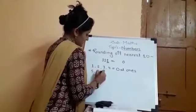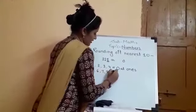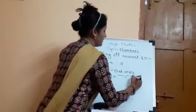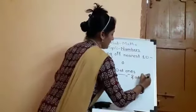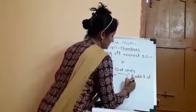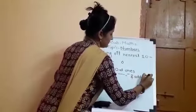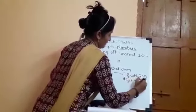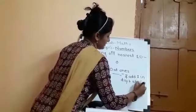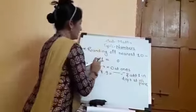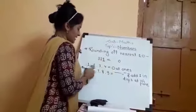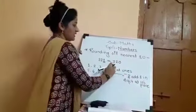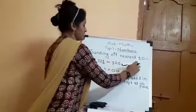If the digit at the 1's place is 5, 6, 7, 8, or 9, then you put 0 at the 1's place and add 1 to the digit at the 10's place. For 321, since 1 is less than 5, the 2 remains as it is and the 3 remains as it is, giving 320 as the value rounded to the nearest 10.